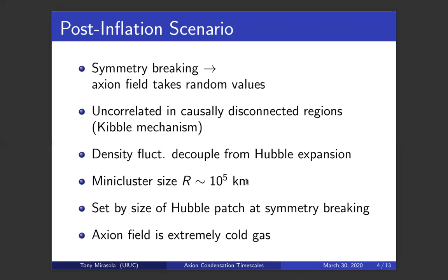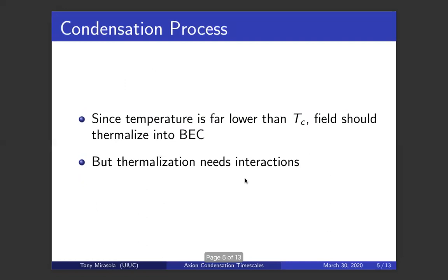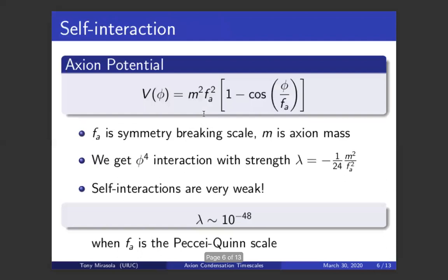In this state of the mini clusters after symmetry breaking, the axion field is an extremely cold gas, but it's not yet a soliton. Since the temperature is far lower than the critical temperature, we would expect that the field should thermalize and reach the thermal state, which can be shown to be a BEC and to include solitons. But in order for thermalization to happen, we need to have interactions because without interactions, we have no phase transitions. So we need to look at the two interactions that the axion field is subject to.